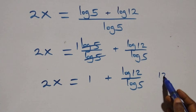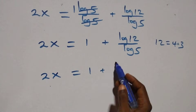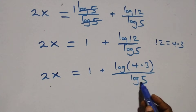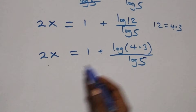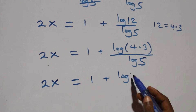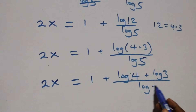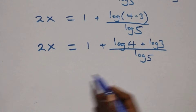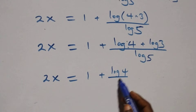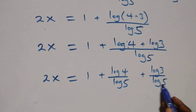From here, we write 12 as 4 times 3. So we have 2x equals 1 plus log of 4 times 3, over log 5. Applying the log product rule, this becomes 2x equals 1 plus log 4 plus log 3, over log 5. We then separate this into two fractions: 2x equals 1 plus log 4 over log 5, plus log 3 over log 5.